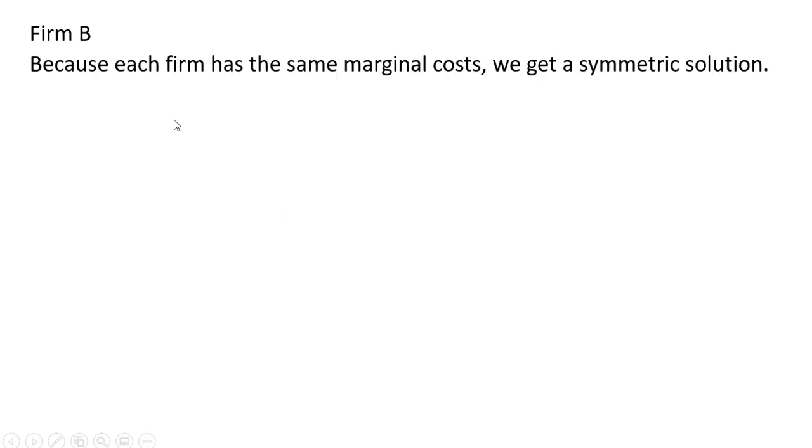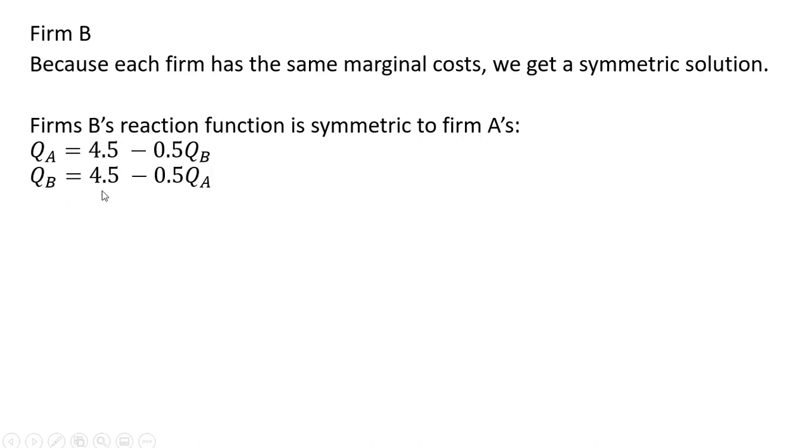For Firm B, the thing to note here is because each firm has the same marginal cost, we get a symmetric solution. Firm B's reaction function is symmetric to Firm A's. Here's Firm A's reaction function. Firm B's is going to be the mirror image of that. And with the symmetric solution, the output of Firm A will equal the output of Firm B.